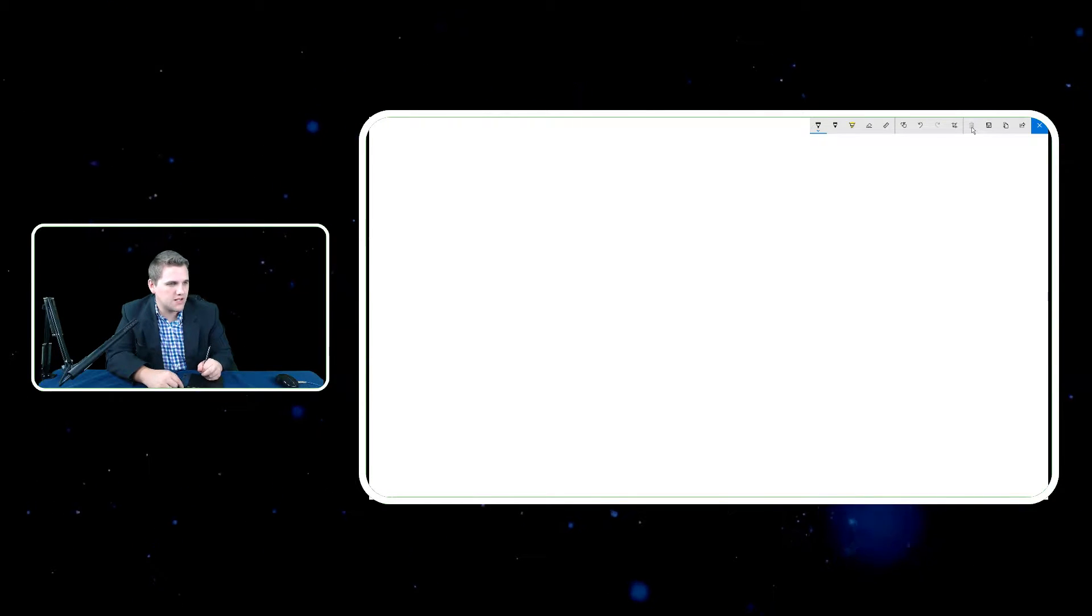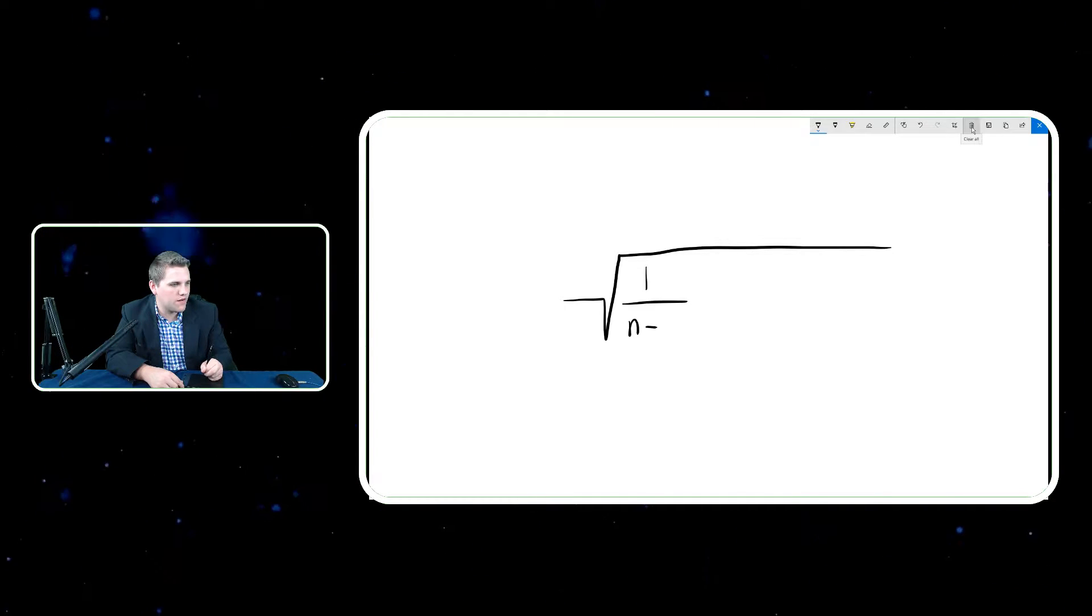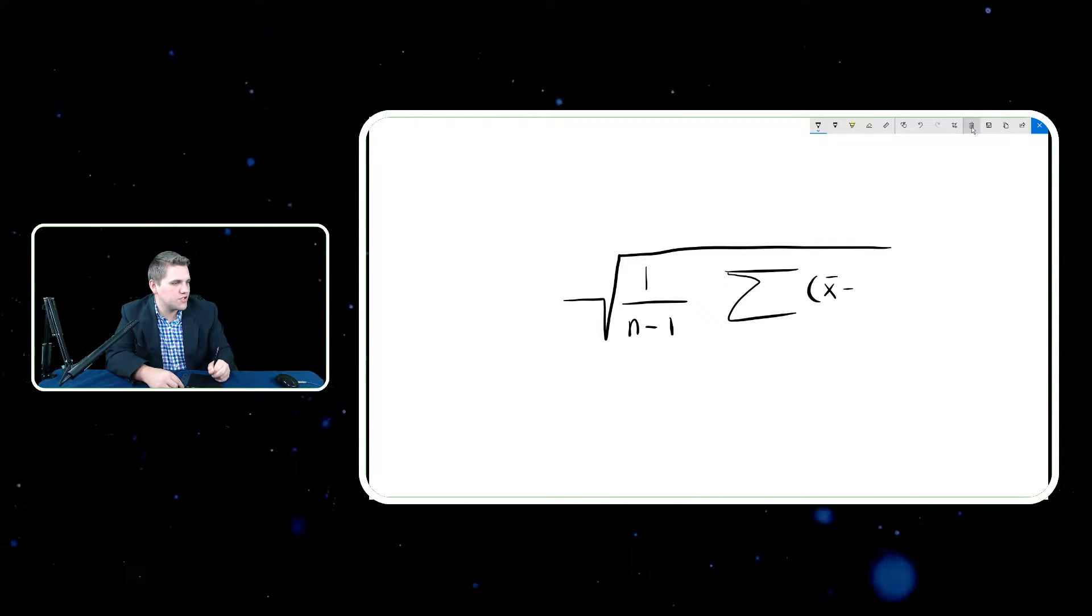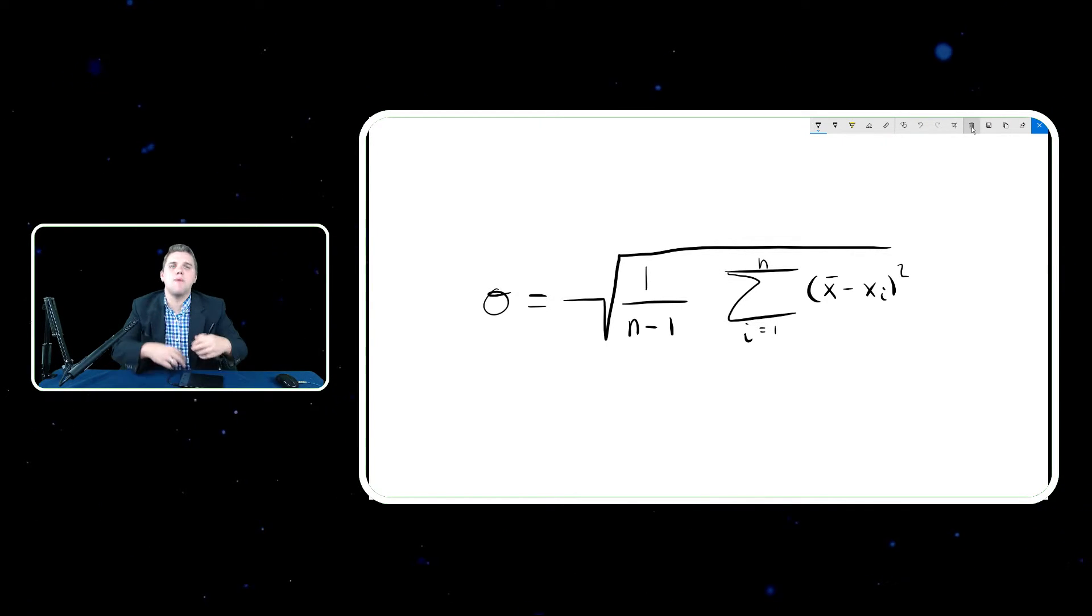It's typically written as the square root of one over n minus one times the sum of all the distances from the average squared. So this is actually how most of the time the formula is written.